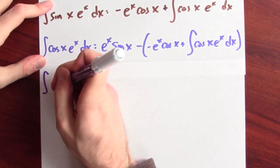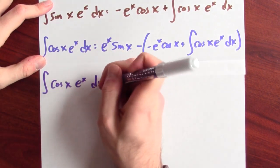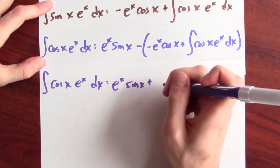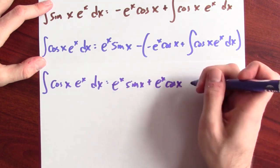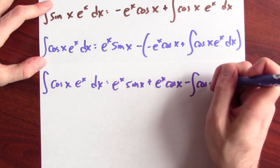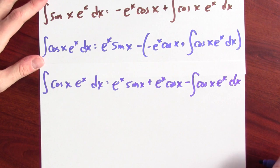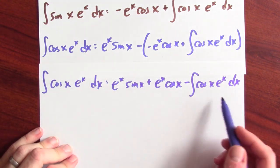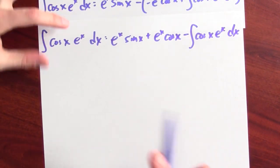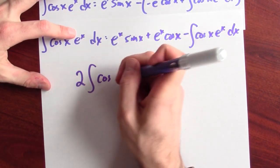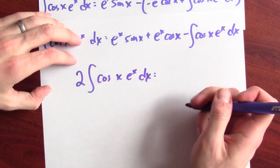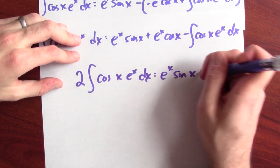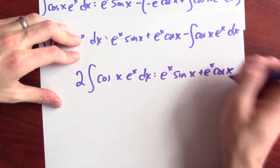So, this is saying the integral of cosine x e to the x dx is e to the x sine x plus e to the x cosine x minus the integral of cosine x e to the x dx. And I'm going to add the integral of cosine x e to the x dx to both sides. And what I'll then get is 2 times the integral of cosine x e to the x dx is equal to, well, what's left on the right-hand side, e to the x sine x plus e to the x cosine x.